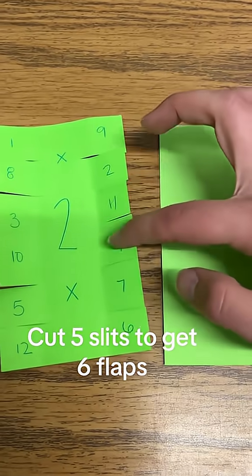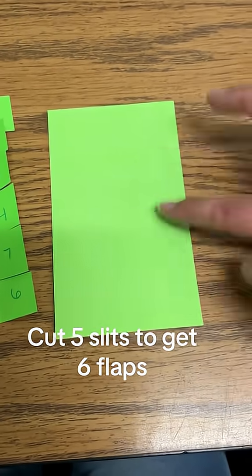One, two, three, four, five, six. You should have six little flaps on each side.